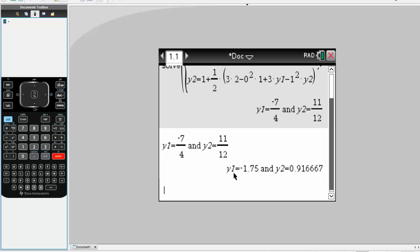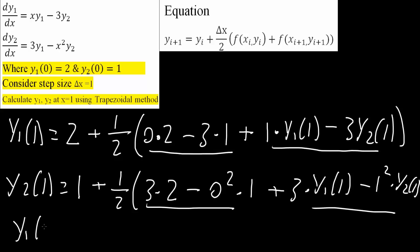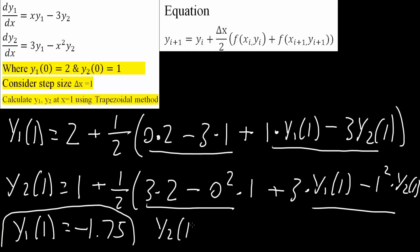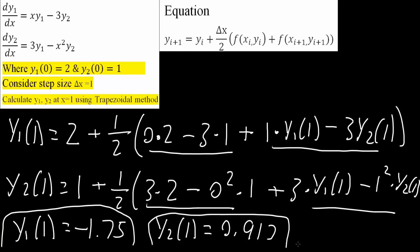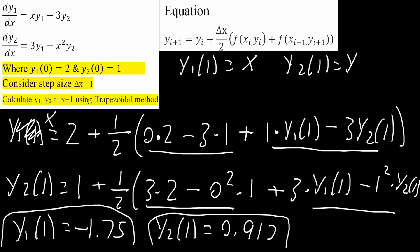The decimal approximation gives us: y1 is going to be negative 1.75 and y2 is going to be 0.917. So the final answer: y1(1), the value of y1 when x is equal to 1, is equal to negative 1.75. Then y2(1), the value of y2 when x is equal to 1, would be about 0.917. If you wanted to solve this by hand, this is two equations and two unknowns — use elimination or substitution. I'd recommend substituting y1(1) with x and y2(1) with y to make it easier to work with. Thank you.